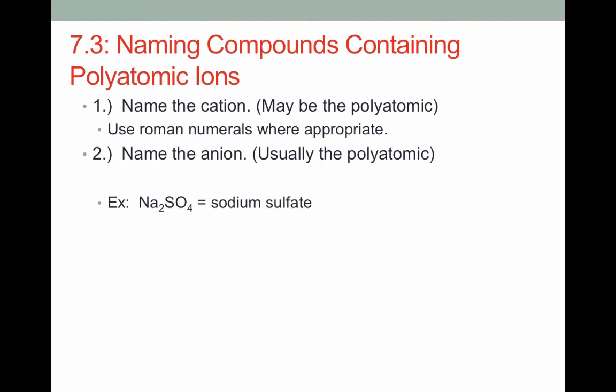So for example, Na2SO4 has a sodium cation and the anion is the polyatomic SO4^2- which is sulfate. Find that on your sheet to verify. Another example, manganese(II) hydroxide. Here manganese is a transition metal, so it needs a Roman numeral of 2 indicating that it has a positive 2 charge. Hydroxide OH- is our polyatomic. Here's an example where the polyatomic is in the anion and the cation. So our cation here is NH4+, or ammonium, and our anion is ClO3- or chlorate. So we have ammonium chlorate.